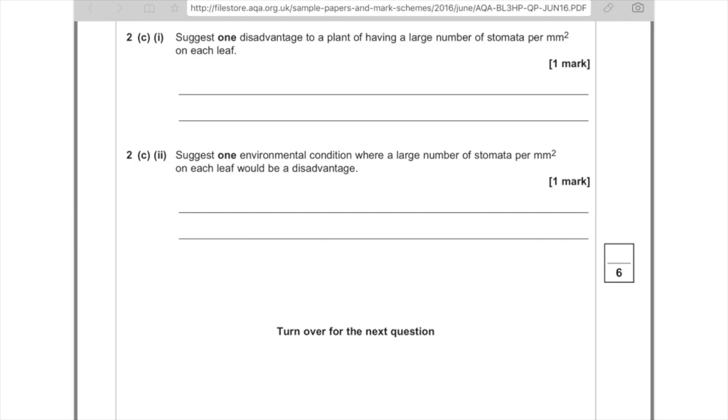So just one environmental condition where a large number of stomata per millimeter squared on each leaf would be a disadvantage. And effectively, you're looking at places where there isn't very much water. So you're looking at hot places, dry places. And remember the other things which affect transpiration is things like wind. So where there's lots of wind, but it's an environmental condition. So don't say desert, even though you'd be right in that a desert would be somewhere where you wouldn't want lots of stomata. They've asked for an environmental condition. So that basically means the weather.